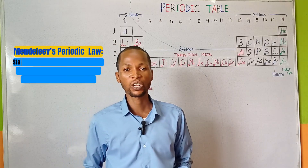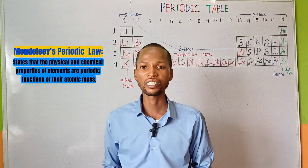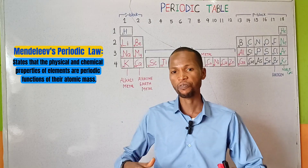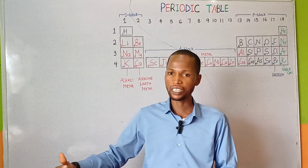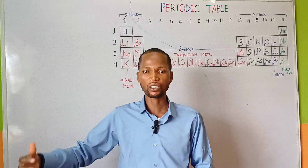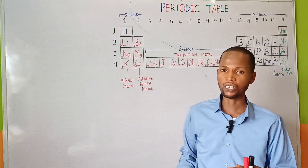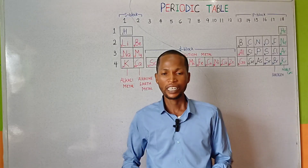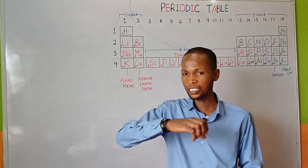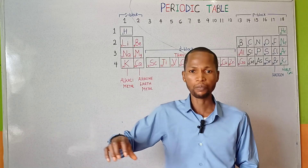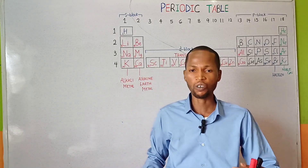According to Mendeleev's periodic law, which states that physical and chemical properties of elements are periodic functions of their atomic masses. That is, elements were arranged based on increasing atomic mass. But the major limitation of Mendeleev's periodic table was that he arranged isotopes of the same elements in different positions in the periodic table since he considered the atomic masses of elements.